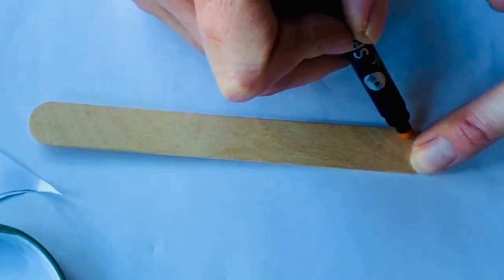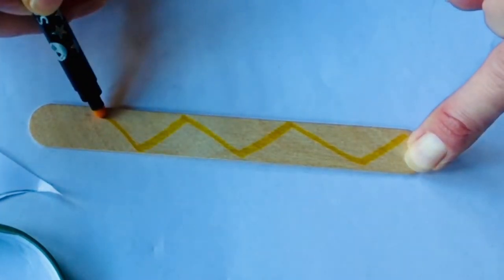Next, you're going to take your lolly stick and decorate it with your coloring pens in whatever pattern you choose.